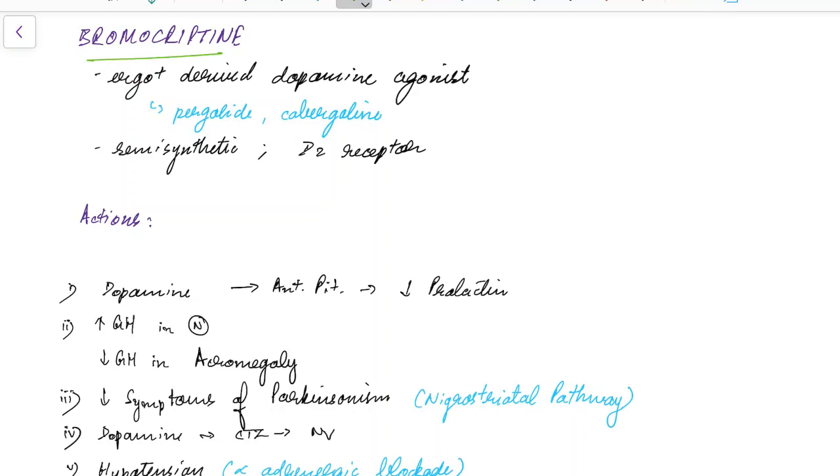Bromocryptin is a semi-synthetic ergot-derived dopamine agonist. Other ergot-derived dopamine agonists include pergolide and cabergoline. Bromocryptin acts as a dopamine agonist at the D2 receptor.